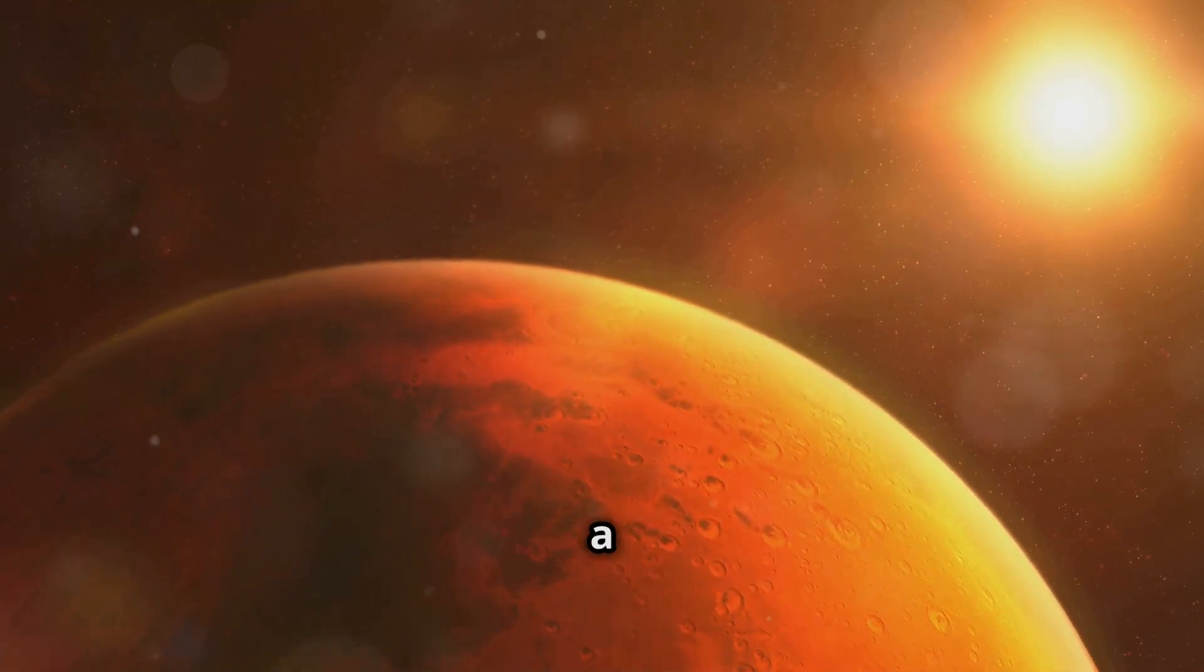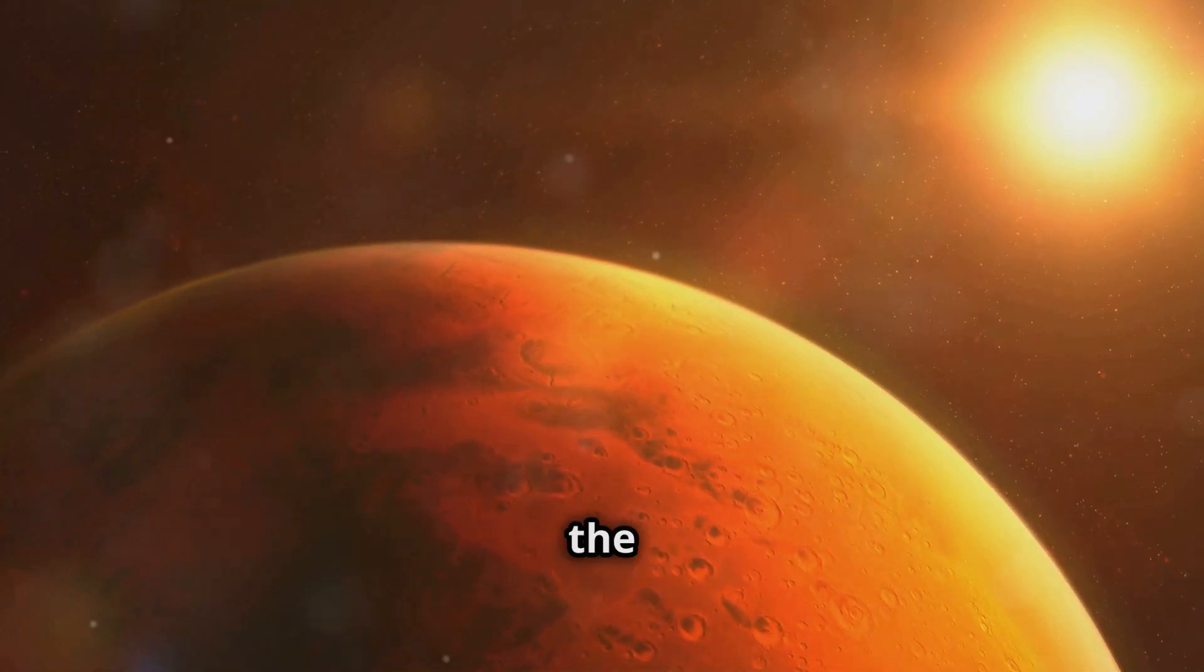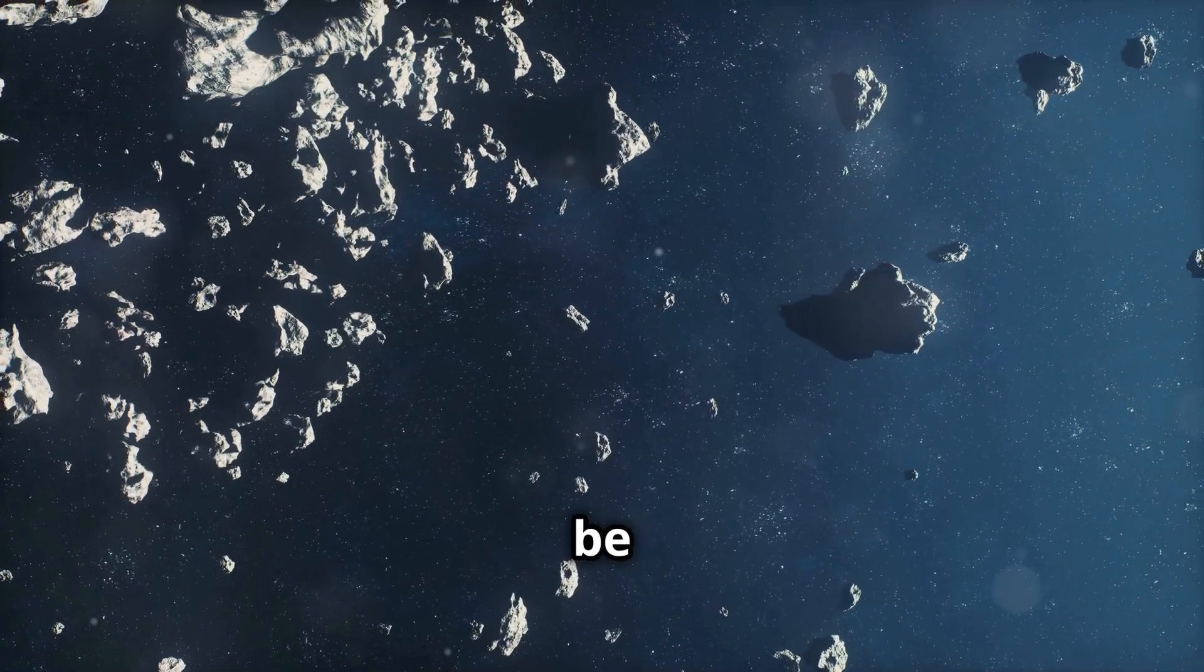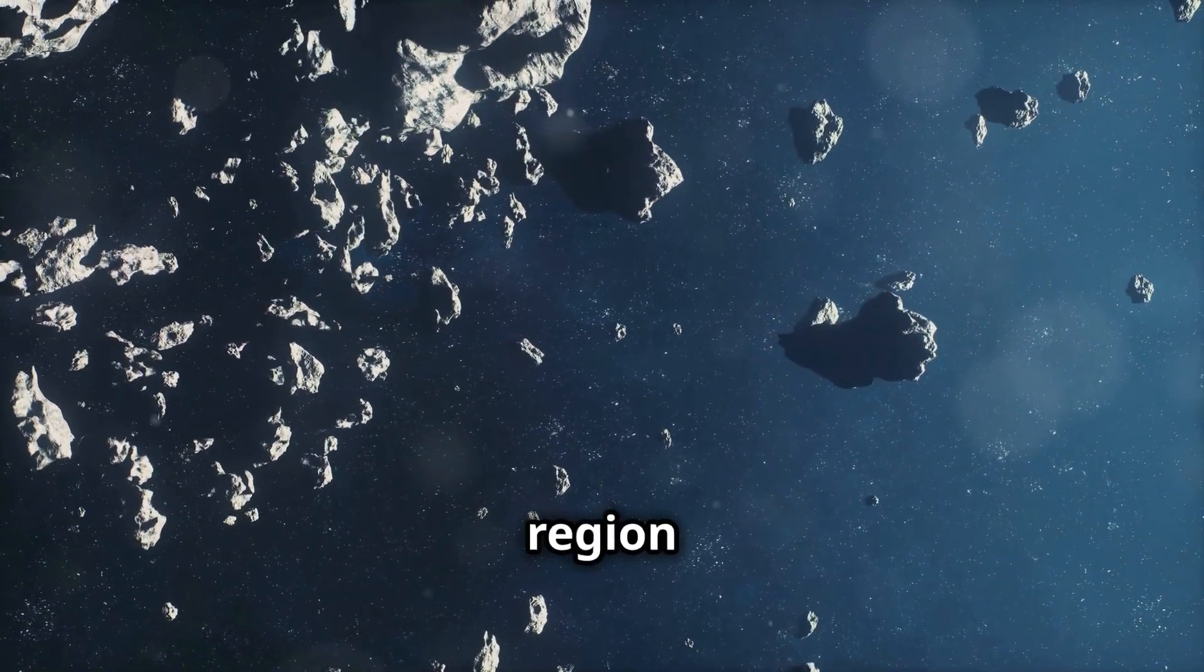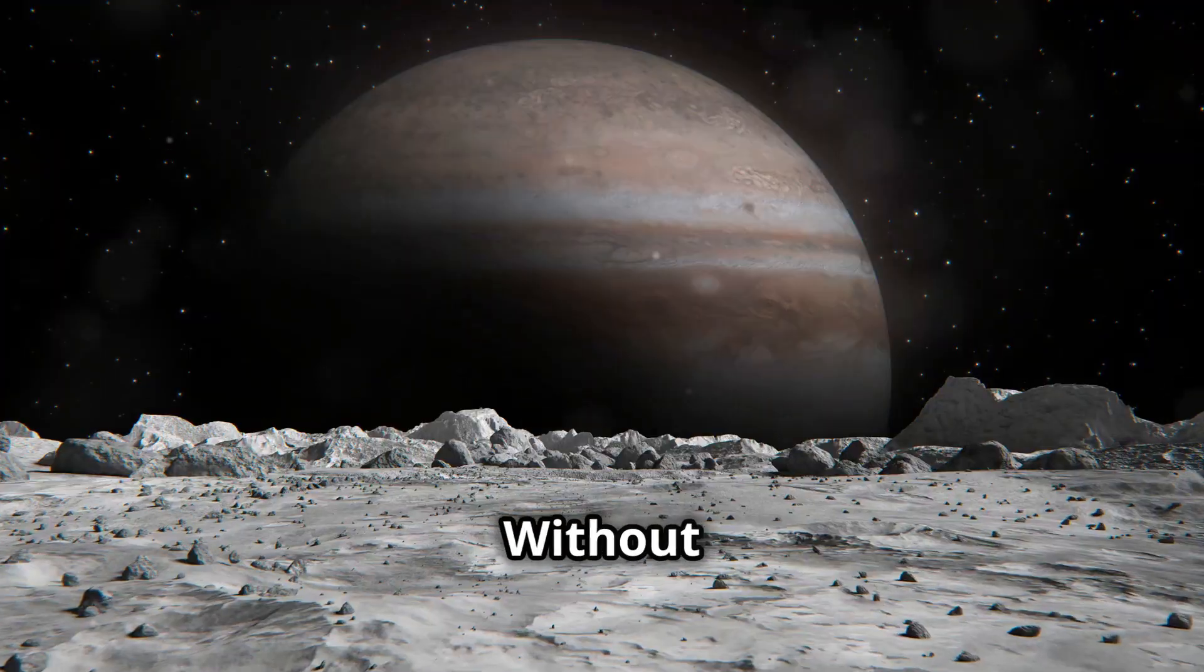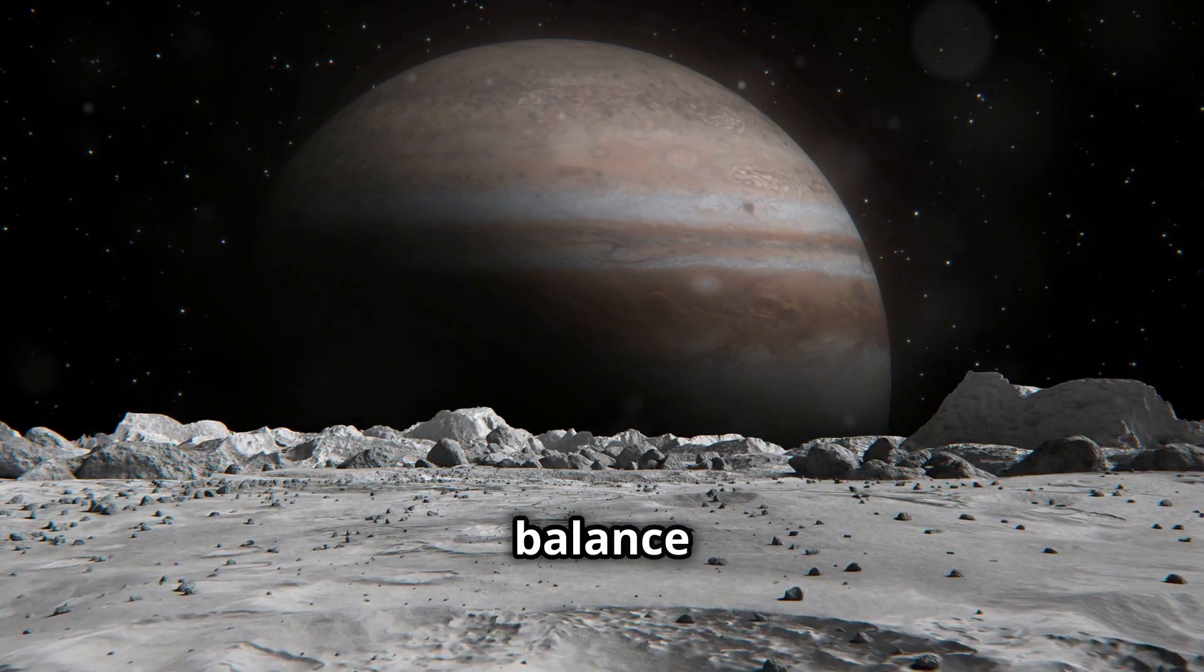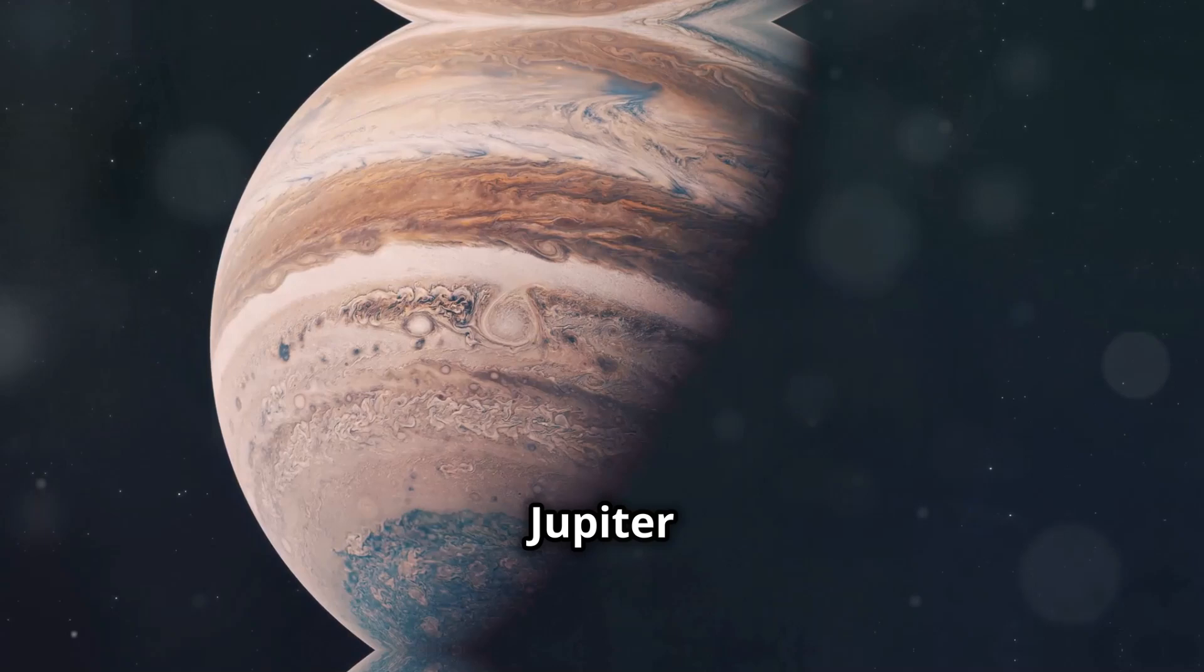Without Earth around, Mars' orbit would become a little more oval, which would change the amount of sunlight Mars receives. But the biggest impact would be on the asteroid belt, that region between Mars and Jupiter. Without Earth's influence, Mars' orbit would change a little, which would mess up the delicate balance of the asteroid belt.